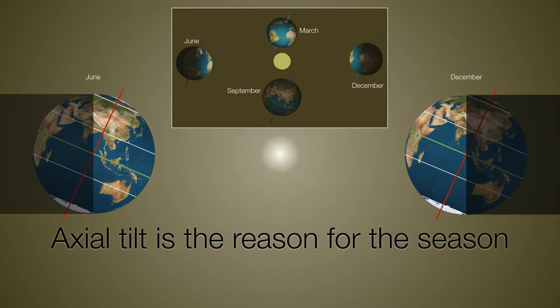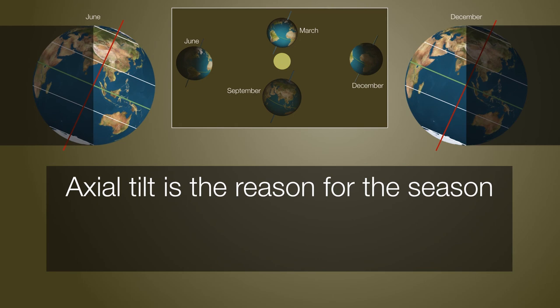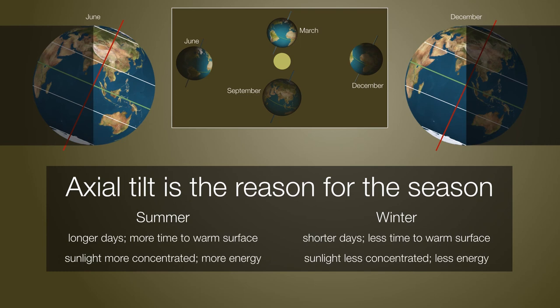The main takeaway is that axial tilt is the reason for the season, and it results in two phenomena. In summertime, we have longer days, giving the sun more time to warm the surface, and the sunlight is much more concentrated, meaning more energy to heat the ground efficiently. By contrast, in winter we have shorter days, so the sun is up for less time, and the sunlight is less concentrated, meaning less energy to heat the ground efficiently.